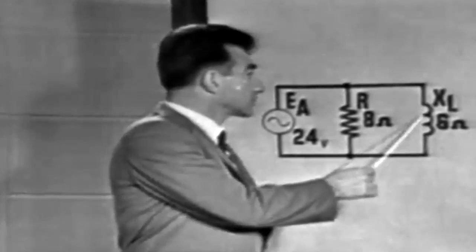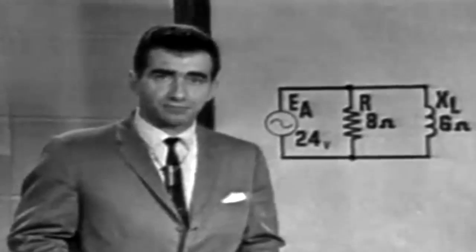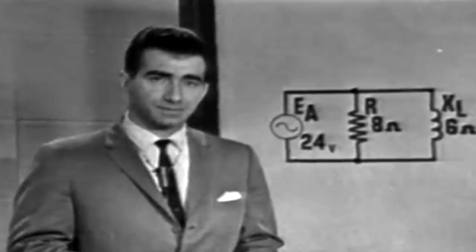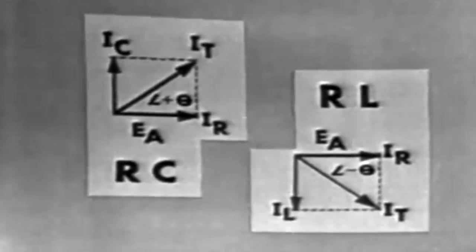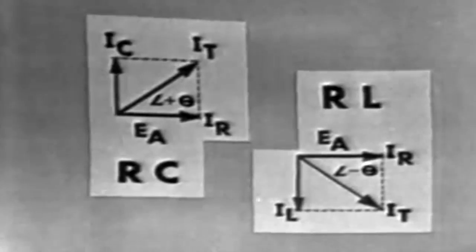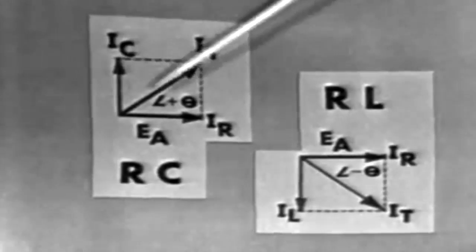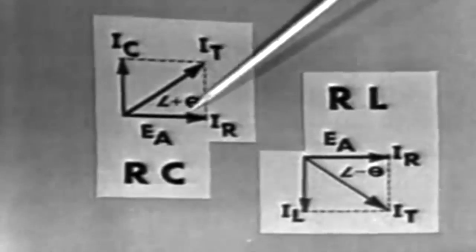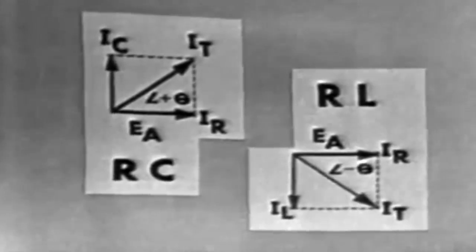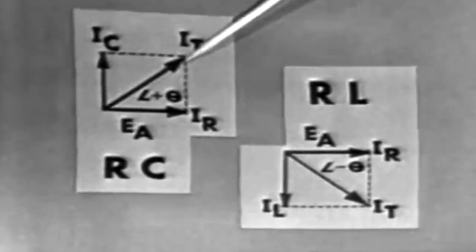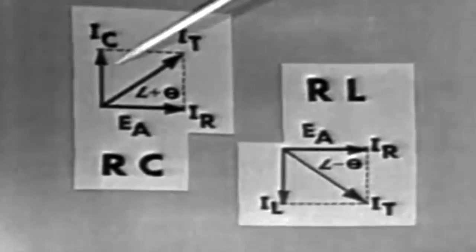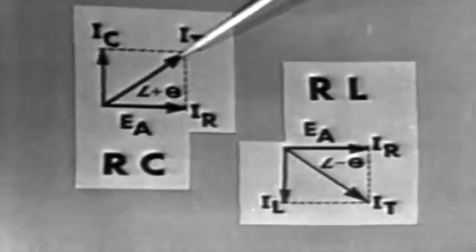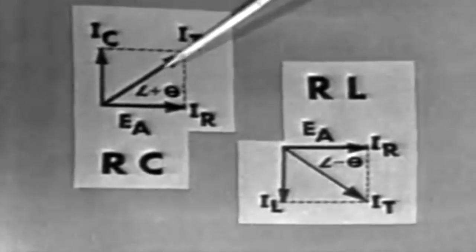The inductor, however, introduces a 90 degree phase shift between current and voltage, but not in the same way as the capacitor. If we plot a vector diagram of the RC circuit, we must show IC 90 degrees ahead of EA because current leads voltage in a capacitive circuit. And of course, the total current will be ahead of EA by some angle less than 90 degrees. Now, this circuit is said to have a positive phase angle or leading phase angle.